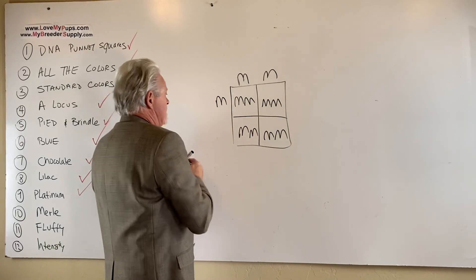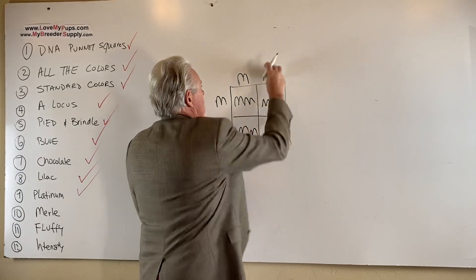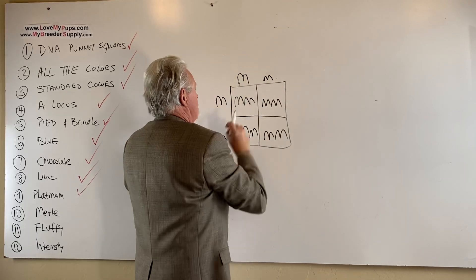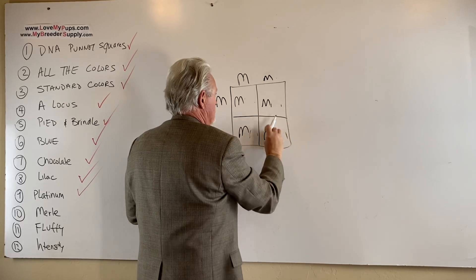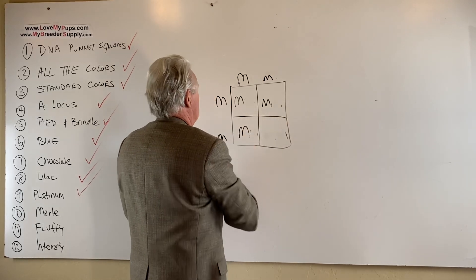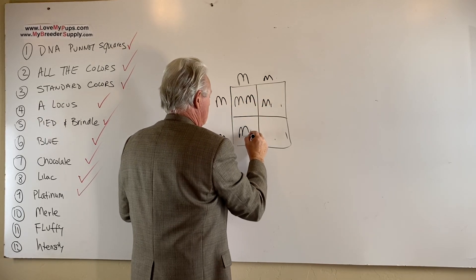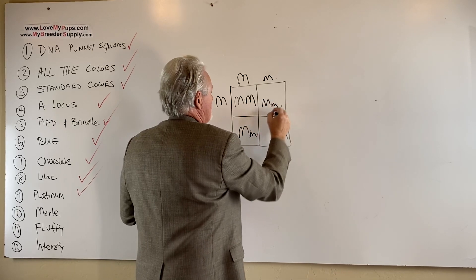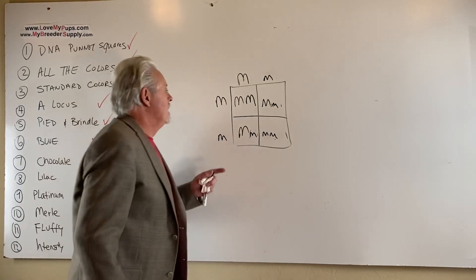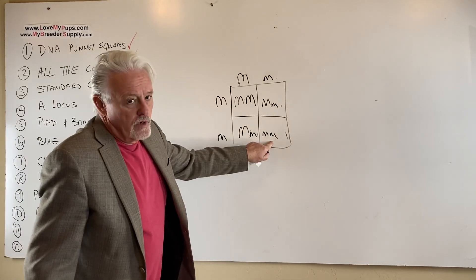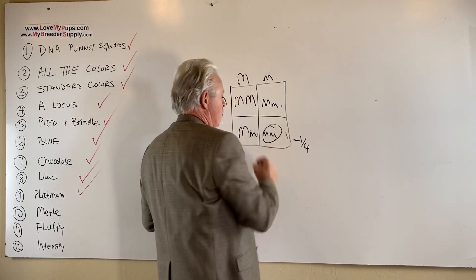So then the other temptation would be to put a Merle carrier dog to a Merle carrier dog. It's a little m for not Merle. Now what do you get? One quarter of the dogs are not Merle.